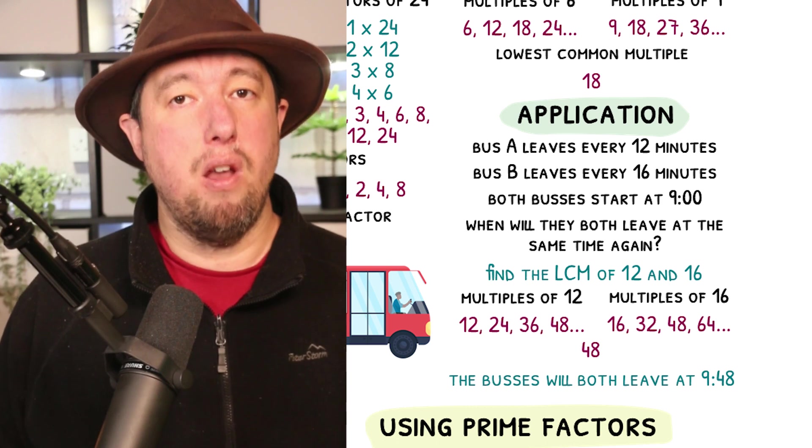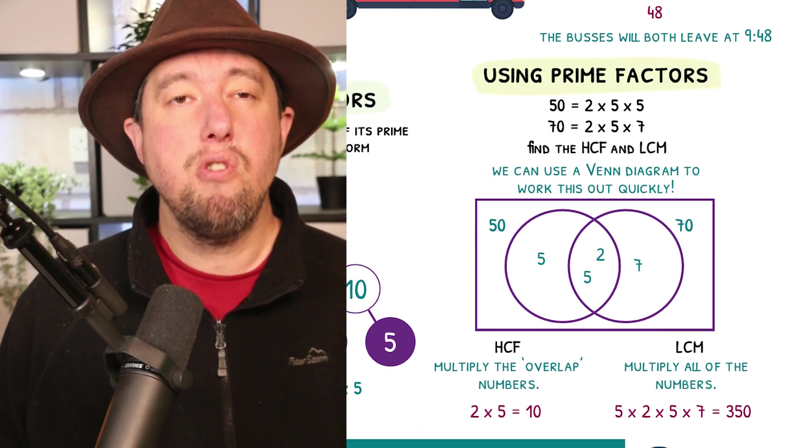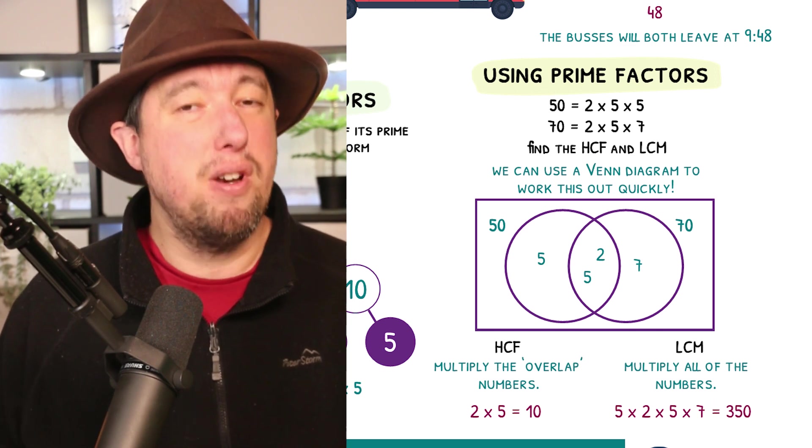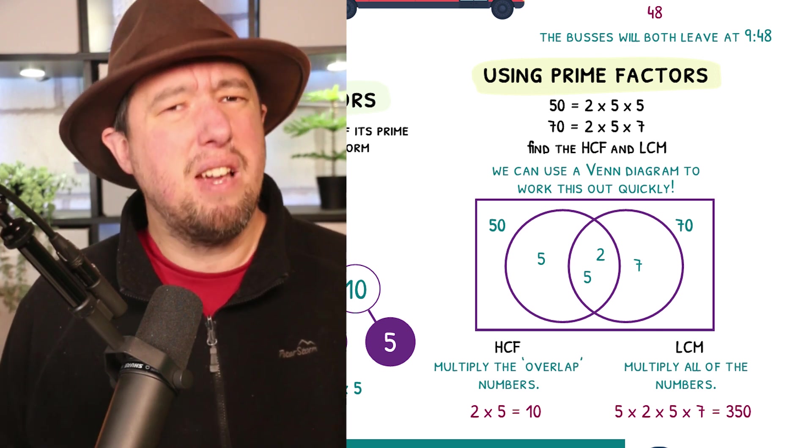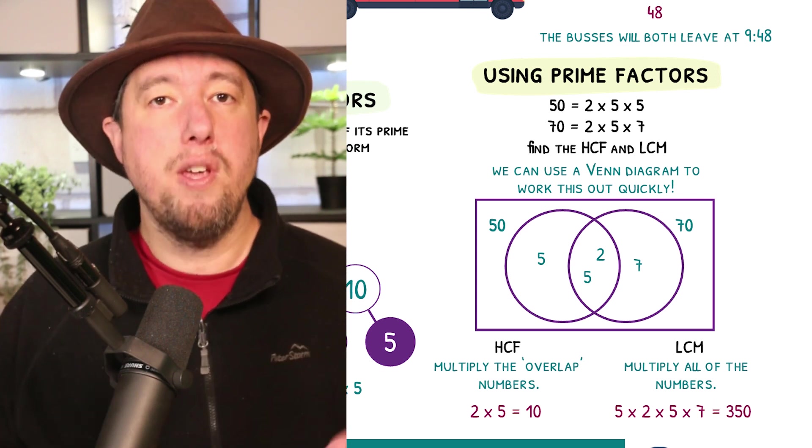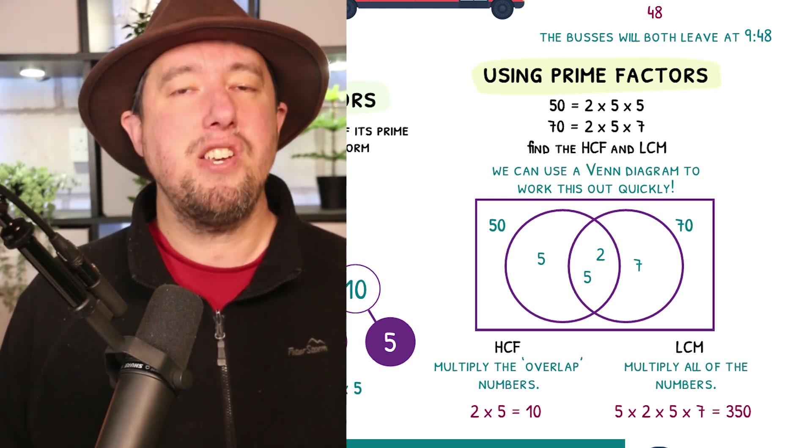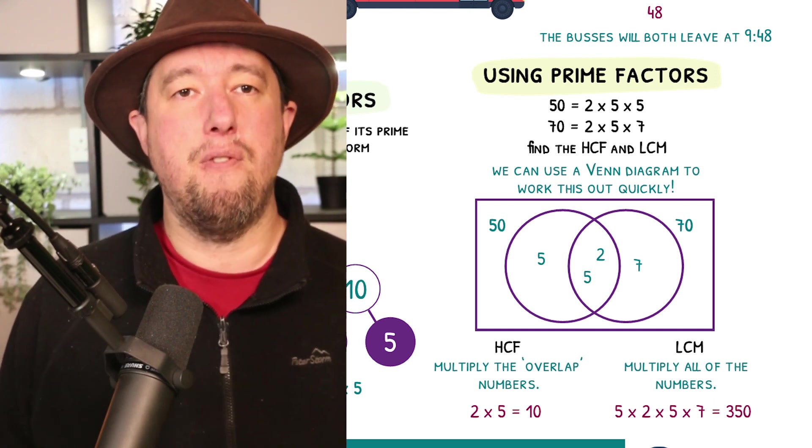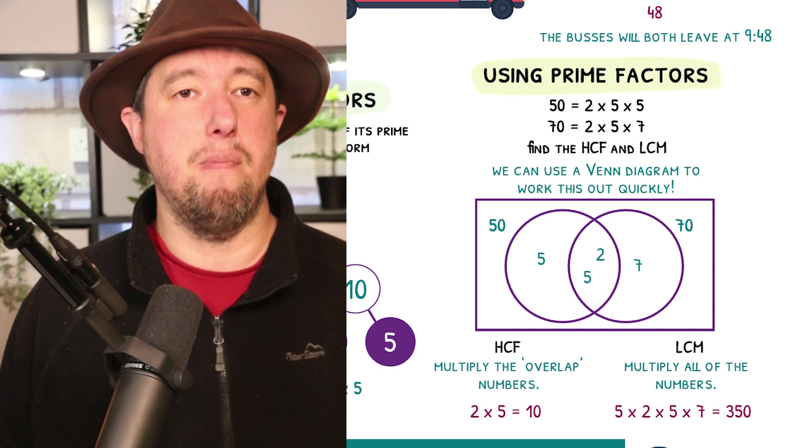Using the skills you've gained so far, finding the lowest common multiple and highest common factor is pretty simple, but does take a while, especially as the numbers get bigger. As mathematicians, we are always trying to find quicker methods. We can actually find the lowest common multiple and the highest common factor using a Venn diagram. The nice thing about this method is it can be very quick for large numbers.